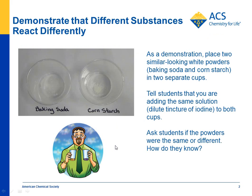You can start by doing a demonstration in which you take two similar-looking powders — baking soda and cornstarch — and show students that they're just white powders. Then you pour some dilute iodine into each cup and see the characteristic chemical change.